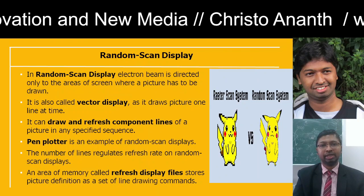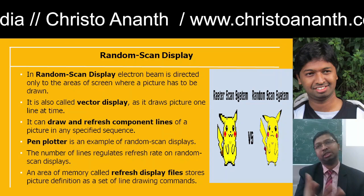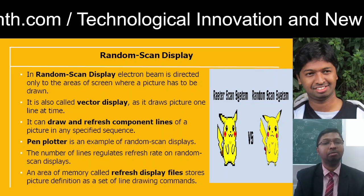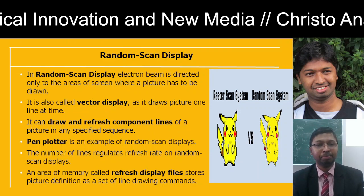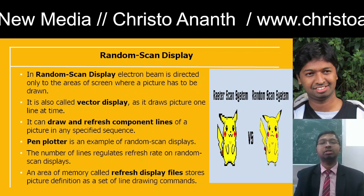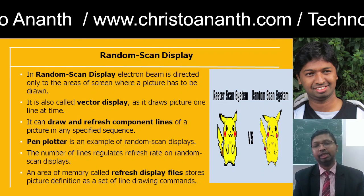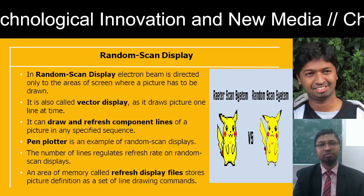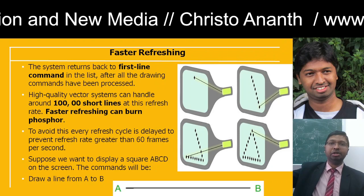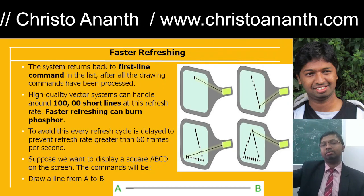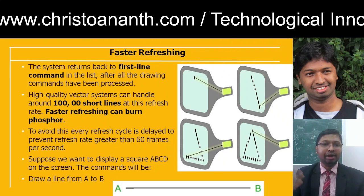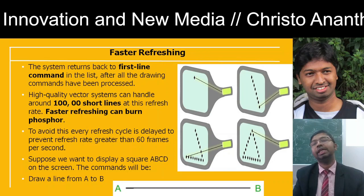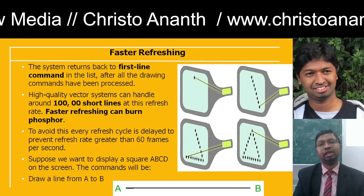In a random scan display, the electron beam is directed only to the areas where the picture has to be drawn — other areas are skipped. It is also called a vector display. It draws and refreshes the component lines of the picture in any specified sequence; a pen plotter is an example. The number of lines regulates the refresh rate. A memory area called the refresh display file stores the picture definition as a set of line-drawing commands. The system returns to the first line command after all drawing commands have been processed, and if there are too many short lines — say 100,000 — the refresh rate may be delayed to 60 or 80 frames per second to avoid burning.